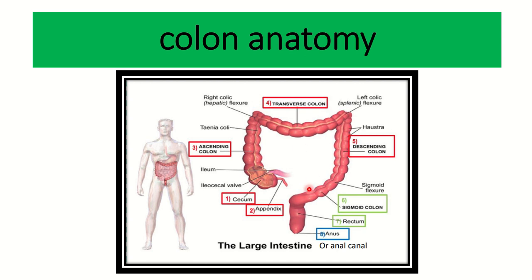Let's see the parts of the colon. First of all, this is the cecum, and at the lower part of the cecum, posteriorly and medially, there is a finger-like projection which is the appendix. Then this one is the ascending colon, then transverse colon, descending colon, sigmoid colon, rectum, and anus. These are the parts of the colon.